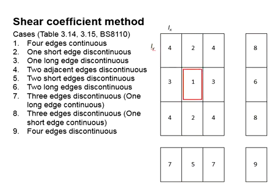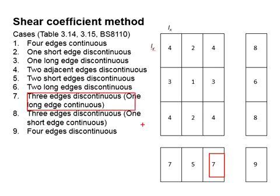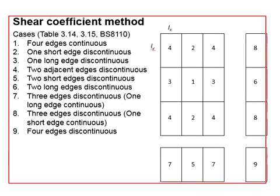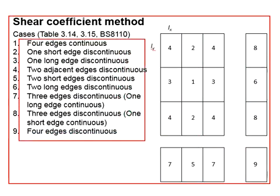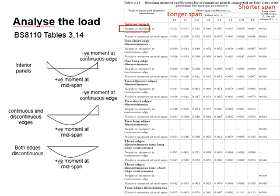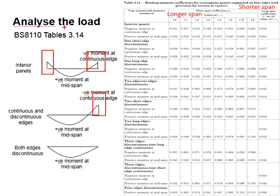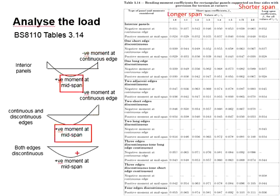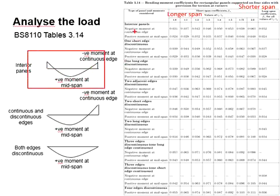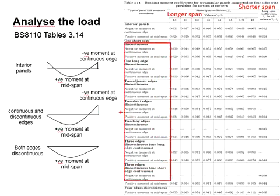For example, this represents all four edges continuous, this represents two adjacent edges discontinuous, and this represents three edges discontinuous with one long edge continuous. You may refer to this slide to determine which case applies to your slab. It is also stated that there are negative moments at the continuous edge and positive moments at the mid-span. This diagram represents the interior panel, this diagram represents the all four edges discontinuous case, and the remaining cases are represented by this diagram.